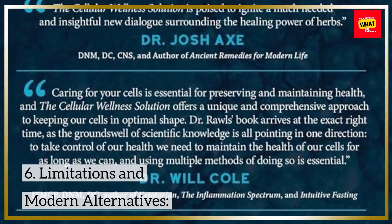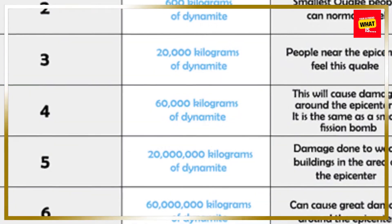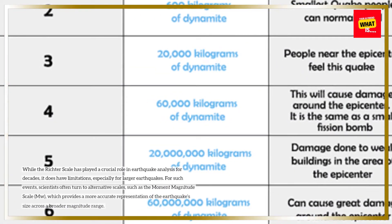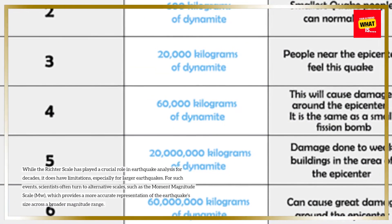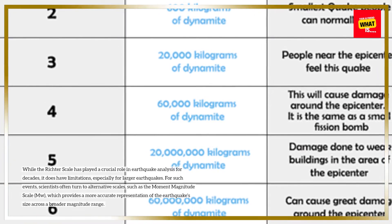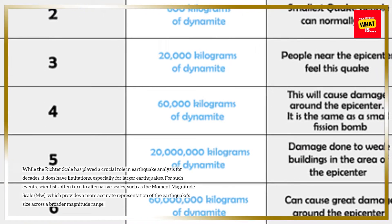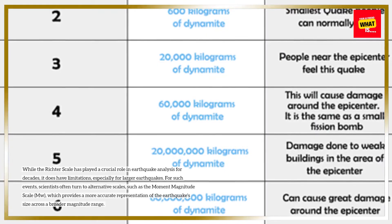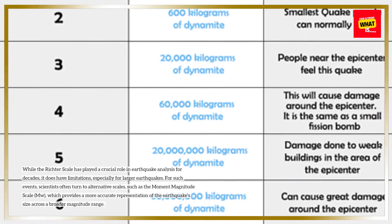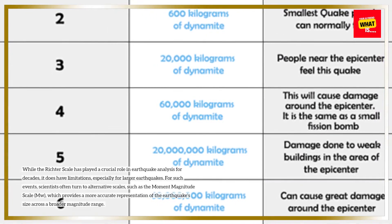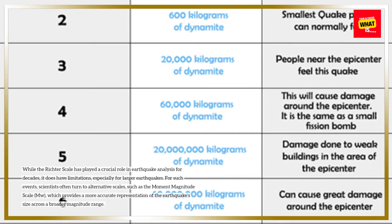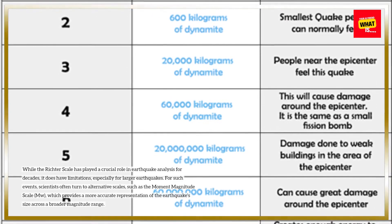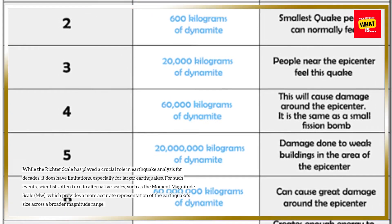While the Richter Scale has played a crucial role in earthquake analysis for decades, it does have limitations, especially for larger earthquakes. For such events, scientists often turn to alternative scales, such as the moment magnitude scale, Mw, which provides a more accurate representation of the earthquake's size across a broader magnitude range.